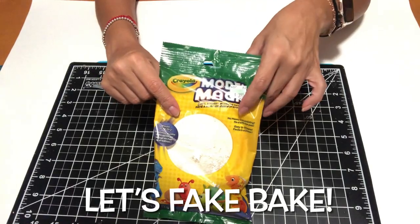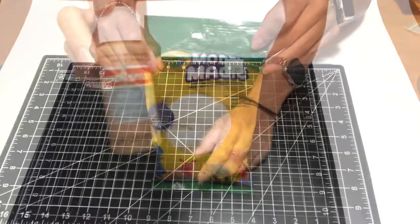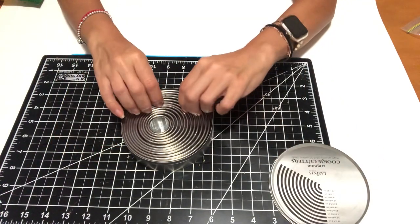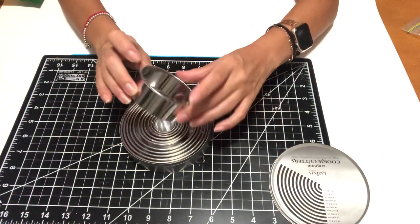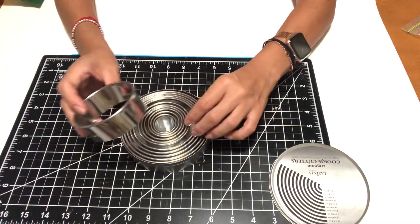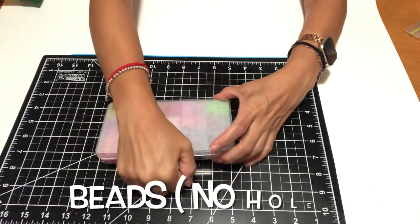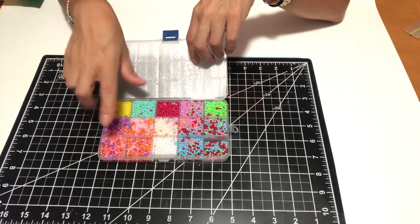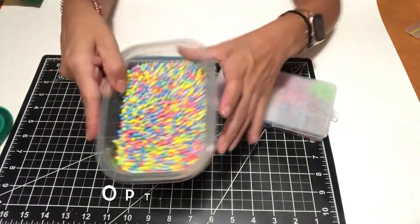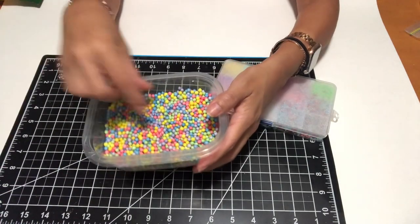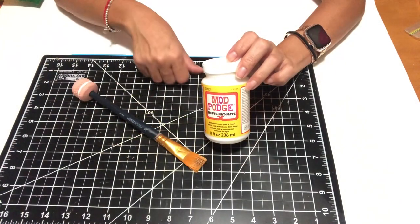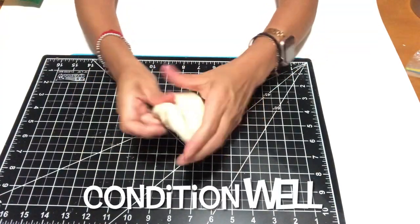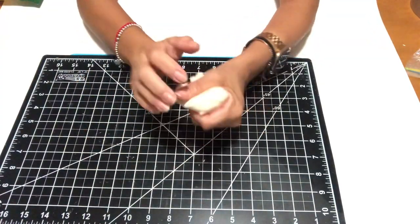I'm going to be leaving a list of all of the items that I use in this video in the description box down below, also links to where I purchased some of the items from. So first I'm going to make the Mexican sprinkle cookies.